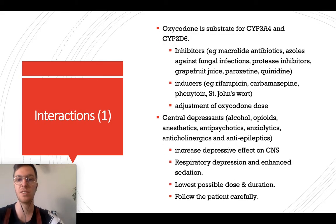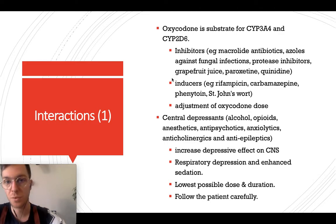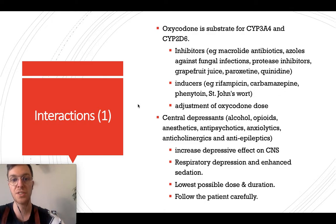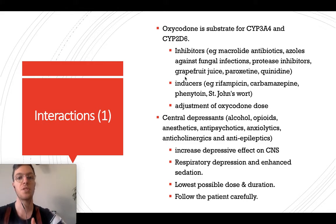Oxycodone has many interactions. It is a substrate for CYP3A4 and CYP2D6. Inhibitors of these enzymes — such as some macrolide antibiotics, protease inhibitors, and others — will lower the amount of oxycodone in your blood and reduce its pain-killing effects. Inducers such as rifampicin and carbamazepine may increase oxycodone levels, increasing the risk of overdose or side effects. Adjust your dose based on any inhibitors or inducers used as co-medication.